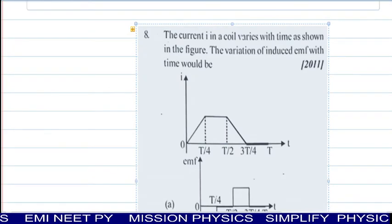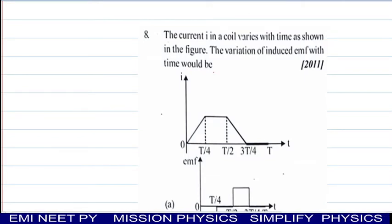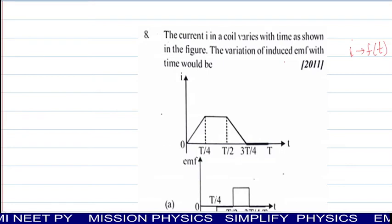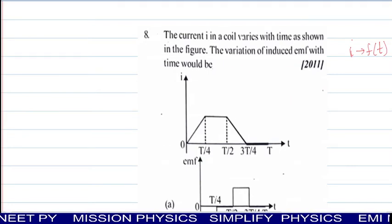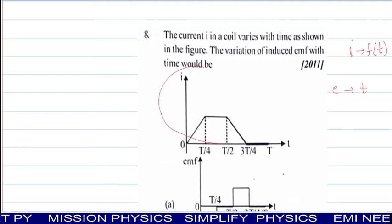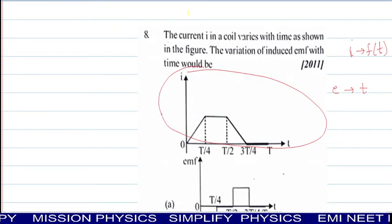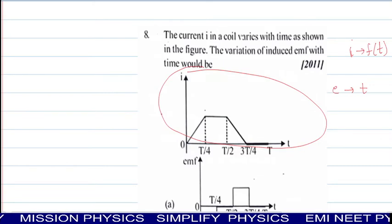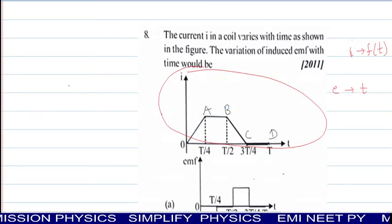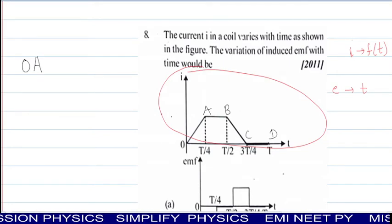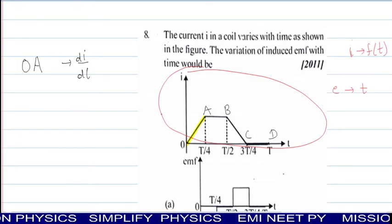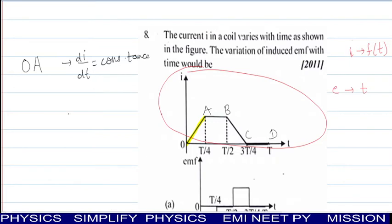Checking next question. Current in a coil varies with time as shown in figure. Current is a function of time. We can indicate I as f of T. Variation of induced EMF with time would be - you have to tell graph between E and T, what kind of graph should be there according to given graph. In this, first in each part of graph, check how many parts there are. We indicate points as A, B, C and let this be D. Now our idea will be easy for discussion. When we see part OA, in OA part the slope is dI upon dt - this equals constant.